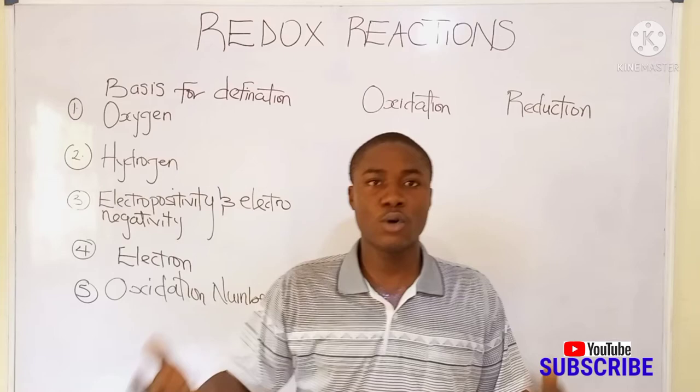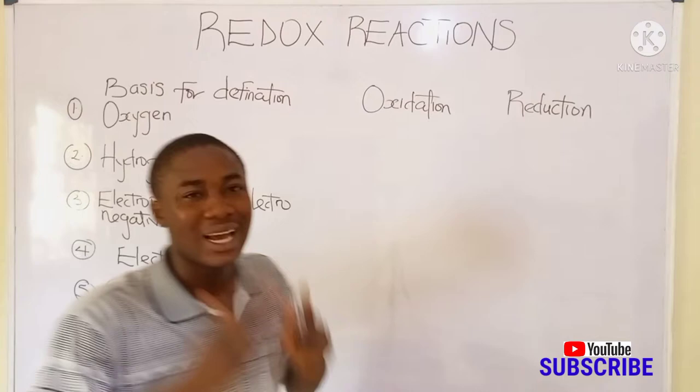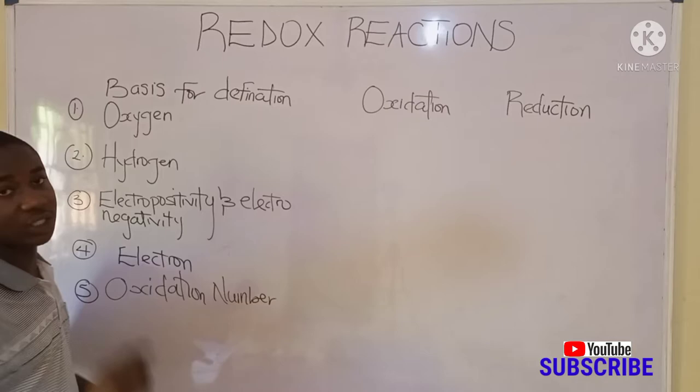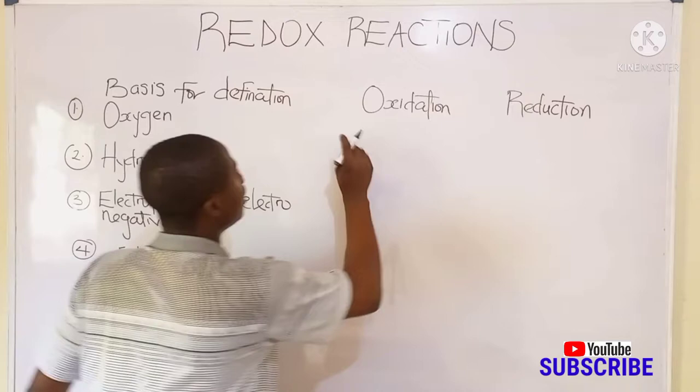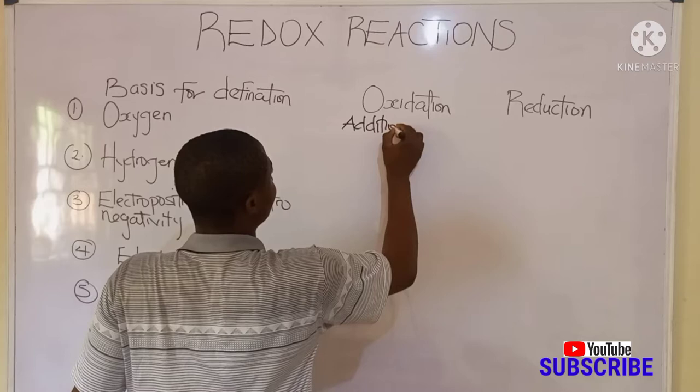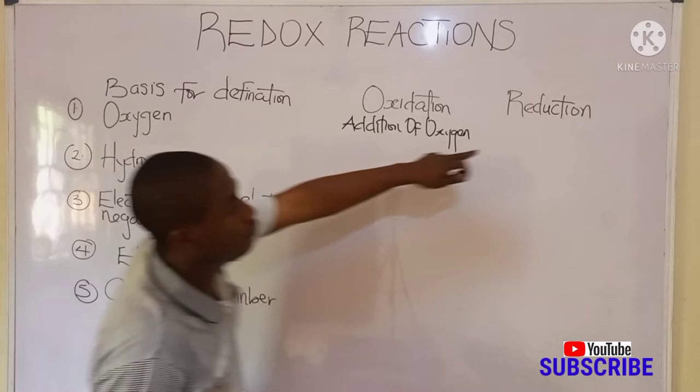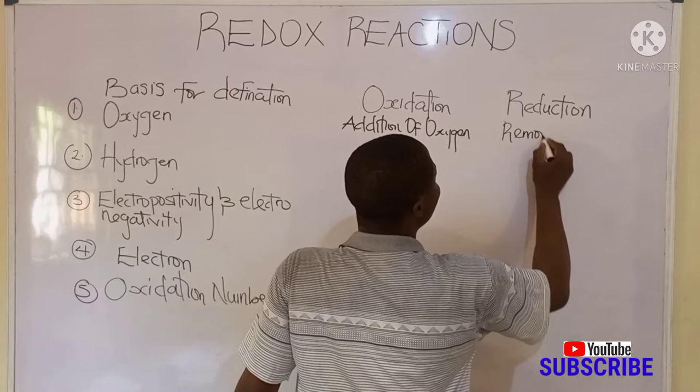It must be noted that to explain oxidation and reduction, there are some bases for the definition. The first basis is oxygen. What is oxidation using oxygen as classification? Basically, oxidation means addition of oxygen. And using oxygen to define reduction — what is reduction? It is simply removal of oxygen.